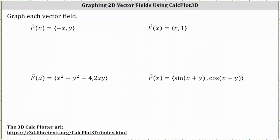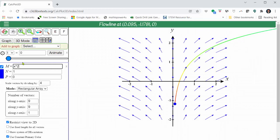And now let's graph the vector field where the x component is x squared minus y squared minus 4 and the y component is 2xy. We enter m equals x squared minus y squared minus 4. Tab, n equals 2xy. And remember, to graph the new vector field, we do have to press enter.